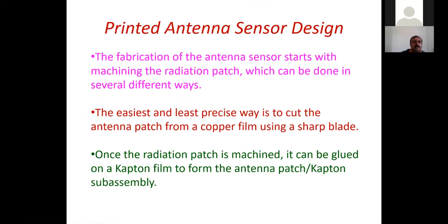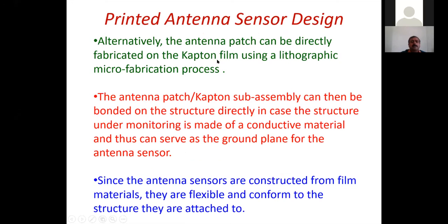For printed antenna sensor fabrication: the easiest method is to cut the metallic foil with a sharp blade or scissors and glue it on Kapton film—a flexible substrate. Unlike the rigid FR4 substrate used in standard microstrip antennas, antenna sensors generally use flexible substrates. Alternatively, the antenna patch can be directly fabricated on Kapton film using lithographic microfabrication. The antenna patch assembly can be bonded directly to the structure under monitoring, and since antenna sensors are constructed from film materials, they are flexible.